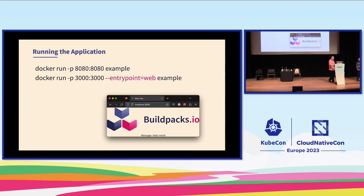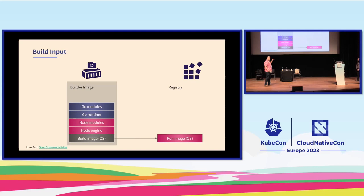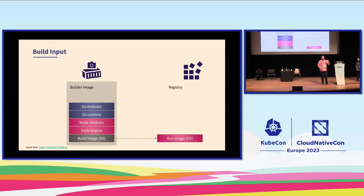What goes into the build is your application source code and a builder. A builder is just an OCI image — it's an easy way to distribute collections of buildpacks. In addition to the buildpacks, the builder contains a build image, which is where the buildpacks actually run while doing their work. The builder also contains a pointer to a run image, which lives on a registry and is used as the base layer in your output application image.